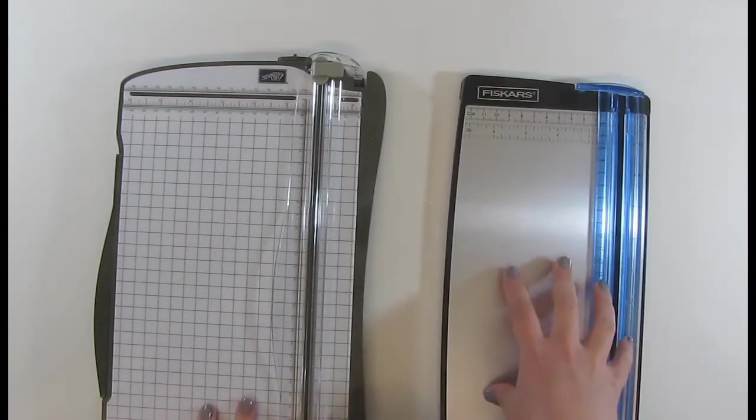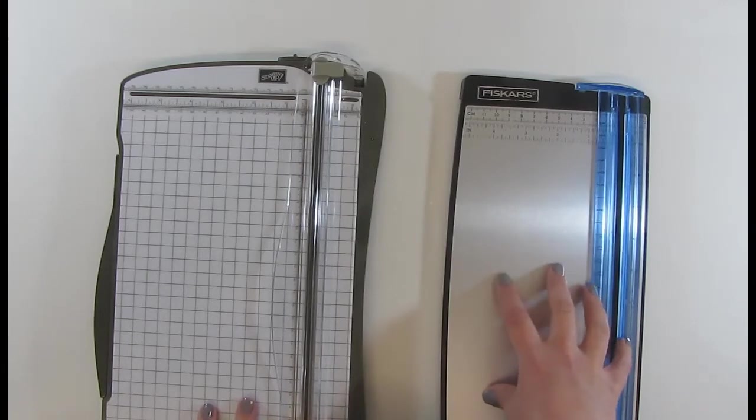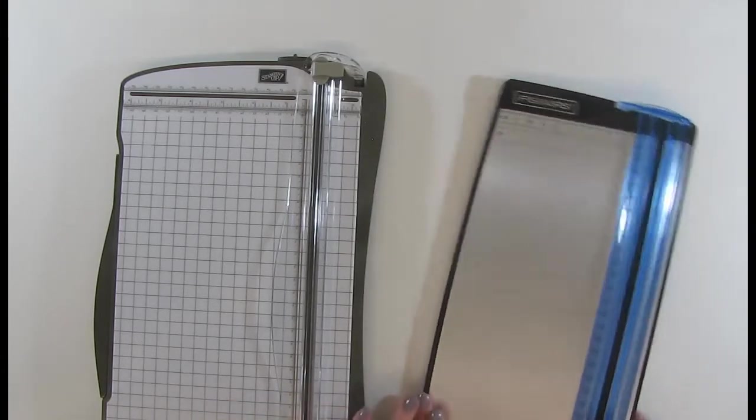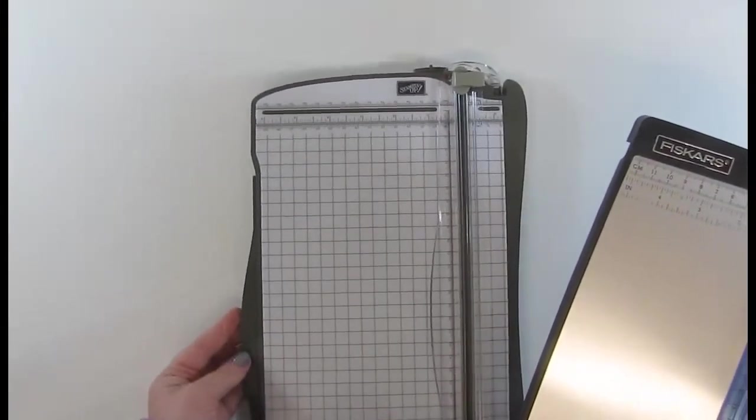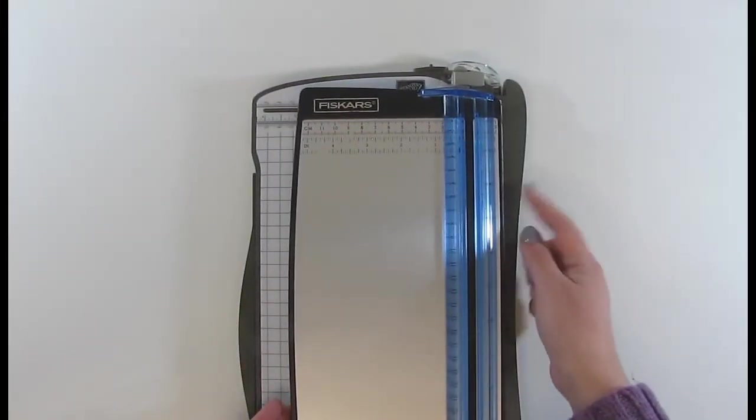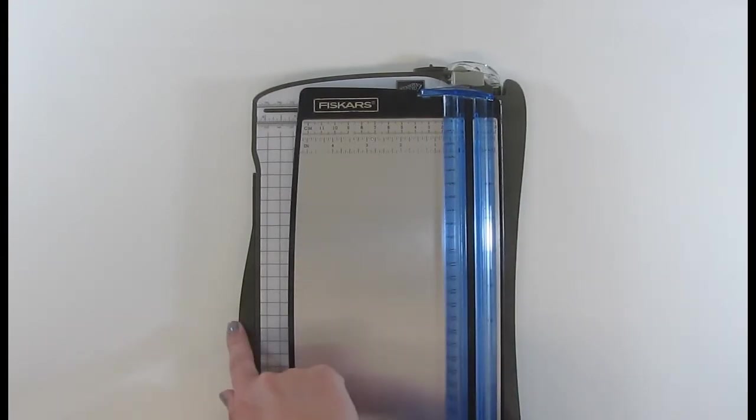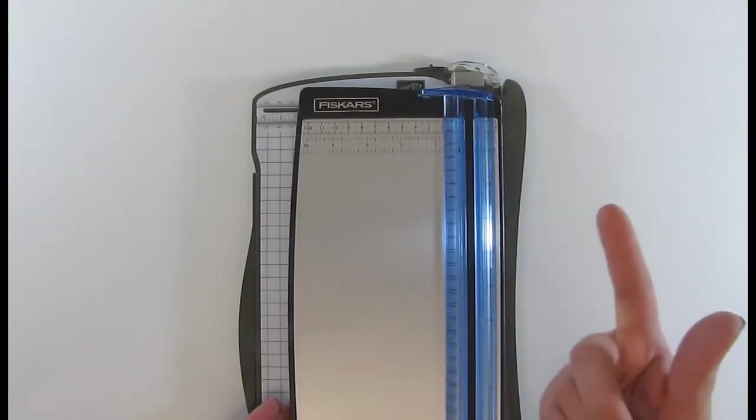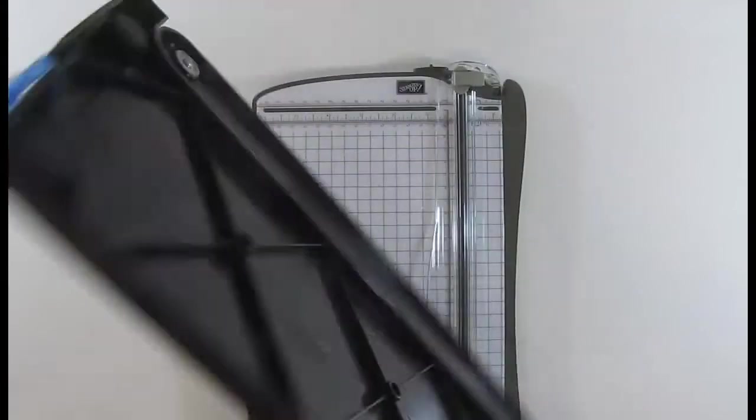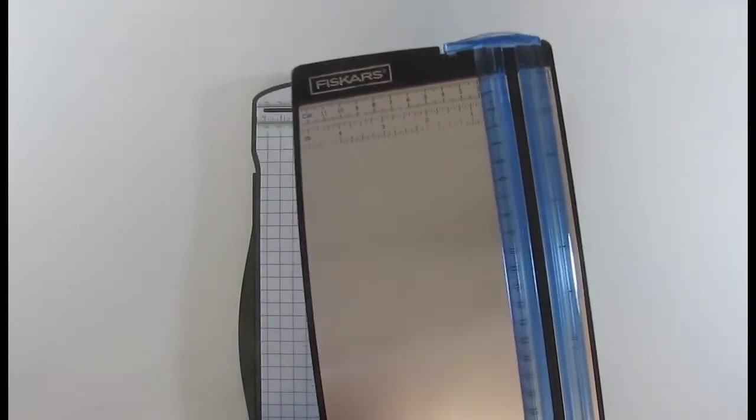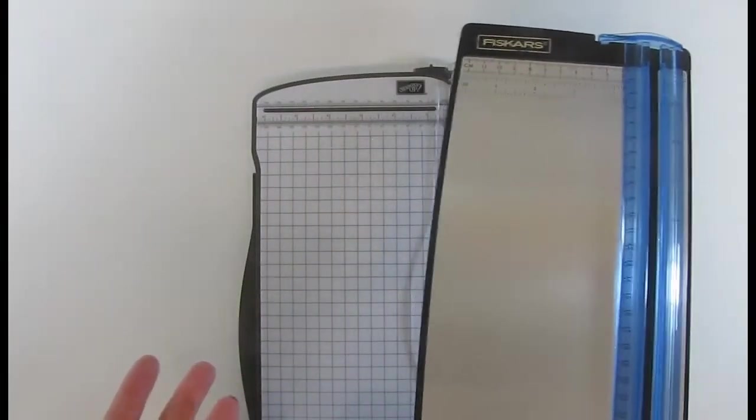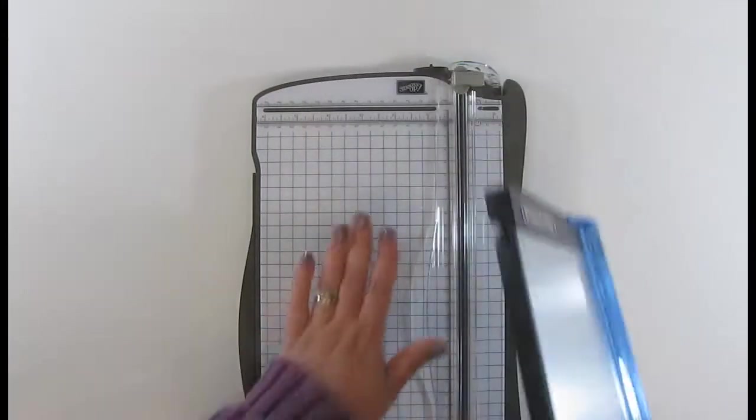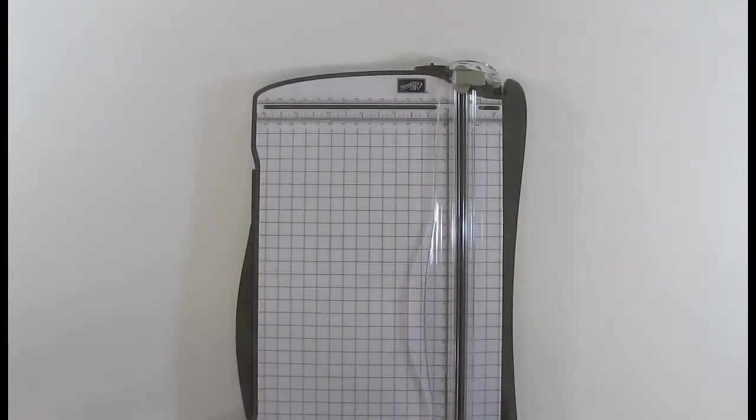Now this is the old Stampin' Up Trimmer that we used to sell and I just wanted to get it out and show you the size difference. If I line up the tracks you can see that it is wider this side and this side and also top and bottom. The other thing is there's no storage compartment and the numbers tended to wear off, so this is probably several reasons why Stampin' Up decided to move on to this one that they sell now.